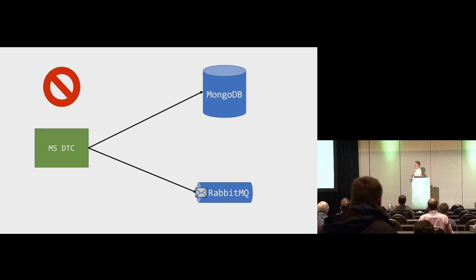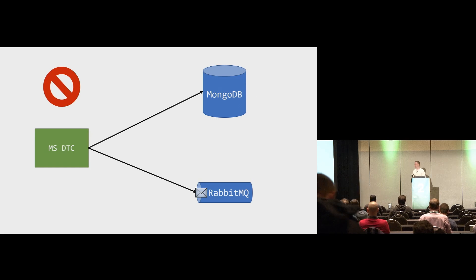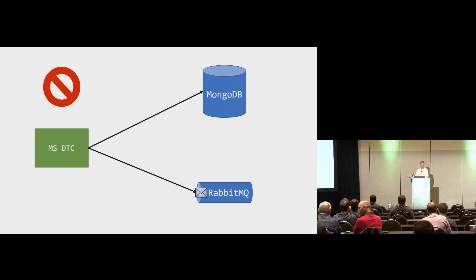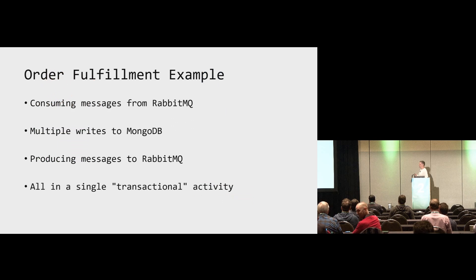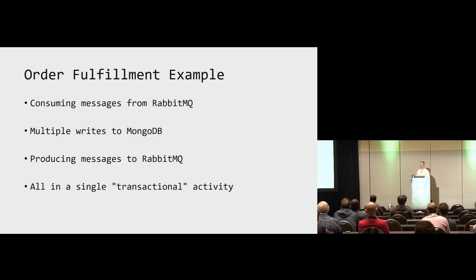The example I'll be working from involves a document database and a message broker. In this case, the document database was MongoDB — which does have multi-document transactions, but with a giant disclaimer saying don't use this in production because it hasn't been fully tested. We were also talking to a message broker at the same time. The scenario is e-commerce order fulfillment: consuming messages from RabbitMQ, doing multiple writes to MongoDB, and producing messages, all within a single transactional activity.